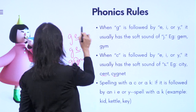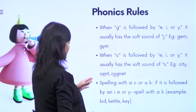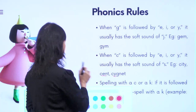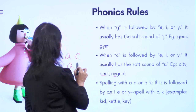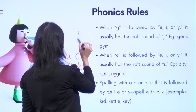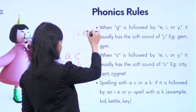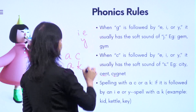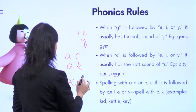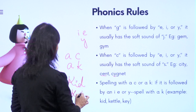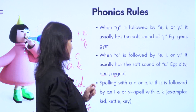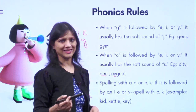Rule seven: spelling with C or K. When a word has the /k/ sound followed by I, E, or Y, you spell it with a K. So: 'kid', 'kettle', 'key' — K is used when I, E, or Y follows.